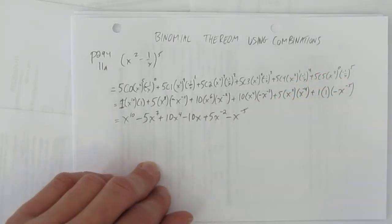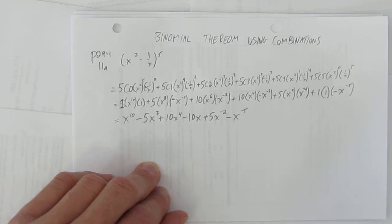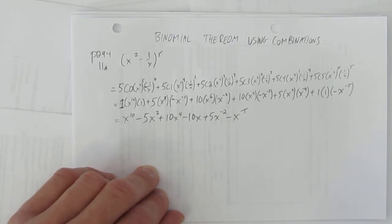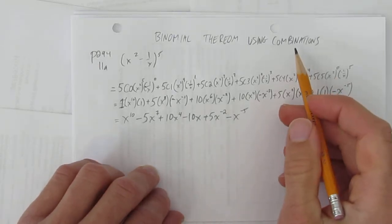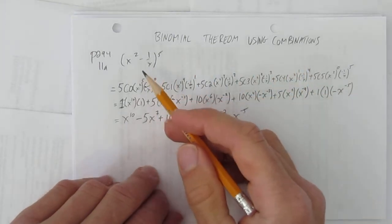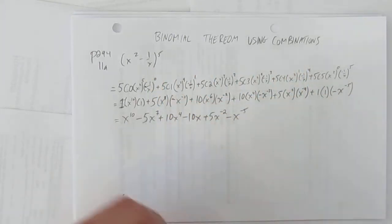And there's my full binomial expansion. What I did was I used the choose notation — that's from combinations — and I expanded and simplified using binomial theorem.